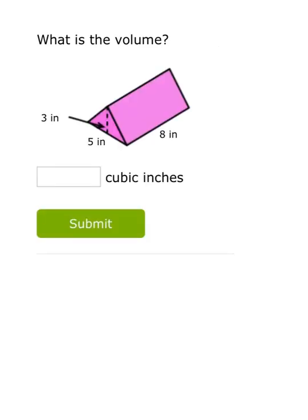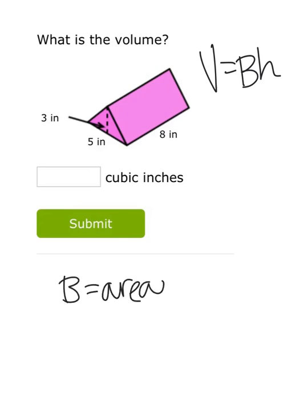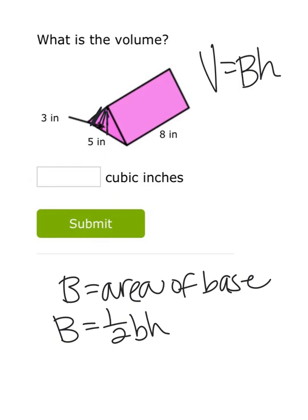Now we have a triangular prism, and the formula is still the same for volume. It's just area of base times height, but this time to calculate the area of the base, instead of a square or rectangle, we have a triangle. And I know the area of a triangle is one-half base times height.